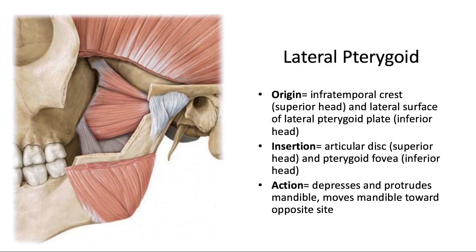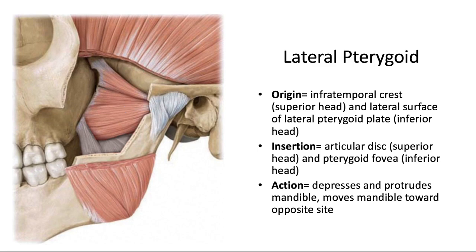Last but not least, we have the lateral pterygoid muscle, which has a superior and inferior head. The superior head originates at the infratemporal crest — the superior border of the infratemporal fossa — and inserts into the articular disc and joint capsule of the temporomandibular joint. The inferior head originates at the lateral surface of the lateral pterygoid plate, hence the name, and inserts into the condylar neck at a depression known as the pterygoid fovea. Both heads work together to pull the disc and condyle forward and down the articular eminence, initiating jaw opening and protruding the mandible. As with the medial pterygoid, unilateral action produces contralateral excursion.